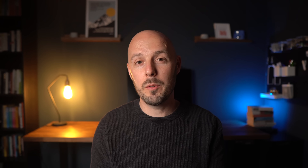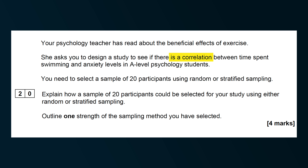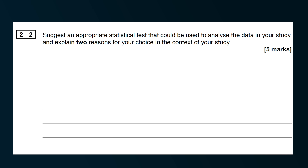For example, in the same exam paper we just looked at, before question 20 there was a change in the scenario: 'Your psychology teacher has read about the beneficial effects of exercise, so asks you to design a study to see if there's a correlation between time spent swimming and anxiety levels in A-level psychology students.' Originally the study was an experiment using a repeated measures design into exercise and stress, but now it's changed to a correlation looking at swimming and anxiety levels. So when question 22 asks for an appropriate statistical test, it refers to the second study, not the first.